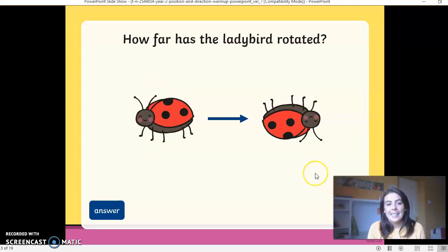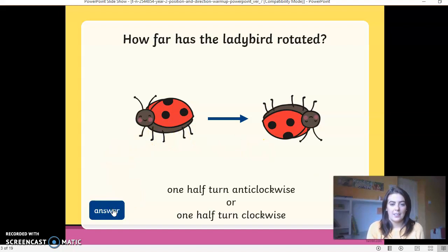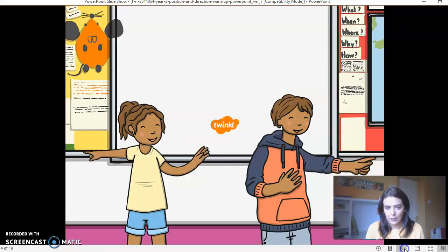How far has the ladybird rotated? So let's think about it. What was your answer? One half turn anticlockwise or one half turn clockwise. Now we know the ladybird has turned half, but we don't know which way if it went anticlockwise or clockwise because we didn't see it turning. And it's not at a position that we can identify that. So well done for all your hard work.